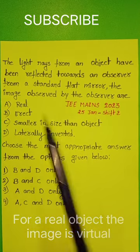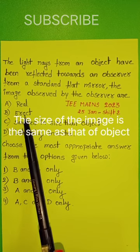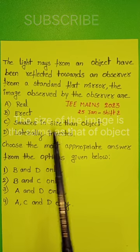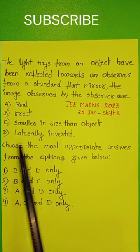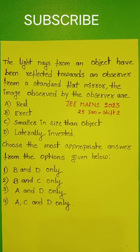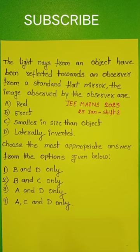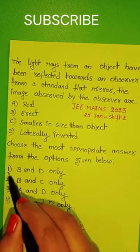So, which of the following is correct? It is not real. Erect is correct. Smaller in size? No. The size of the image equals the size of the object. Yes, it is laterally inverted. So, erect and laterally inverted. The first option is correct.